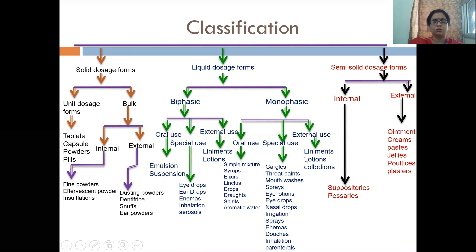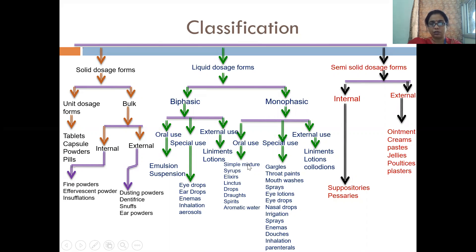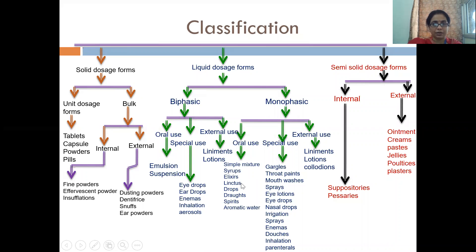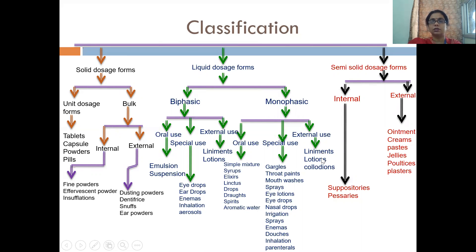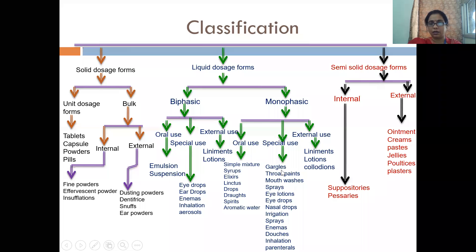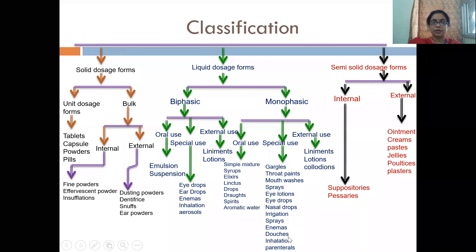For oral use, examples include mixtures, simple mixtures, syrups, elixirs, linctuses, drops, spirits, and aromatic waters. For external use: liniments, lotions, and collodions. For special use in monophasic: gargles, throat paints, mouthwashes, sprays, eye lotions, eye drops, nasal drops, irrigation liquids, enemas, douches, inhalations, and parenterals.